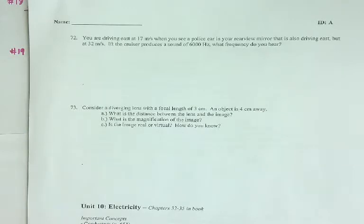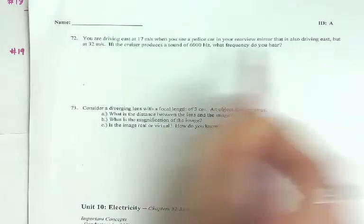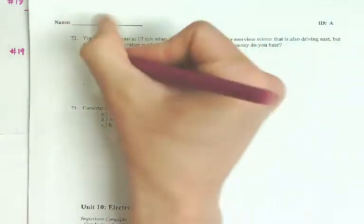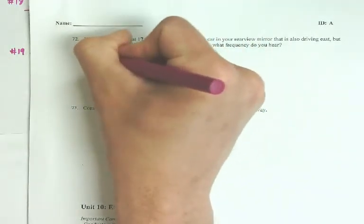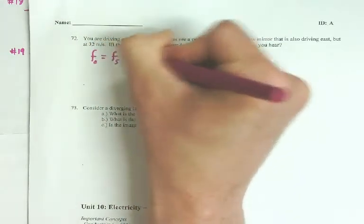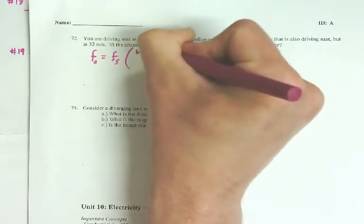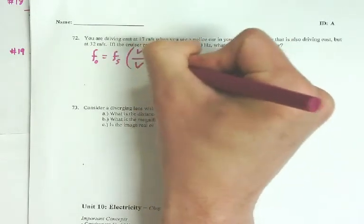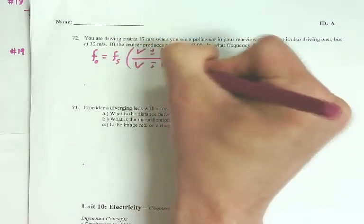So, this is Doppler effect, and I know it's Doppler effect because it's talking about what I hear versus what is made. And that's the Doppler effect, so that's this equation. F-O equals F-S times V plus or minus V-O over V minus plus V-S.